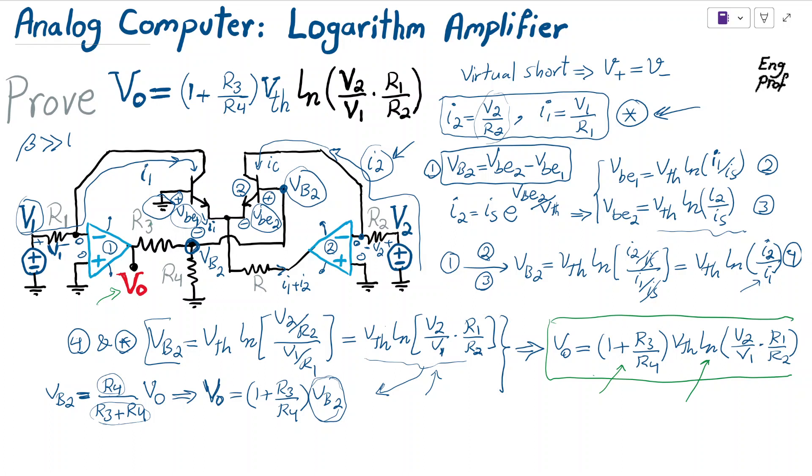In practice, people try to counteract the extreme thermal dependency of this computation because V threshold is very thermally sensitive. One practice is to select R3 much larger than R4, so that 1 plus R3 over R4 effectively becomes R3 over R4. For the smaller resistor R4, it's possible to select a thermally adjustable resistor.